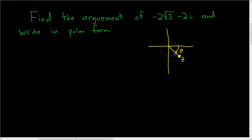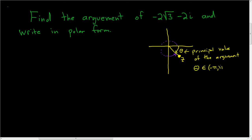So what is an argument? Well, the argument is the angle. In this case, theta is going to be called the principal value of the argument. The reason we call it the principal value is because it resides in what we call the principal branch — that's the interval negative pi to pi.